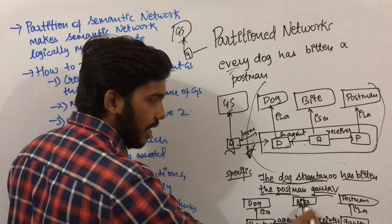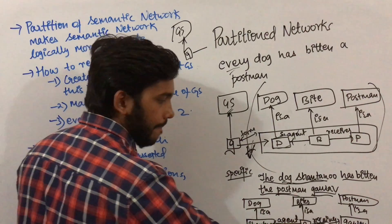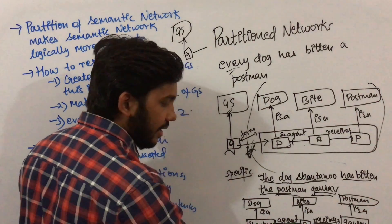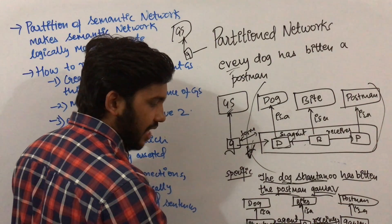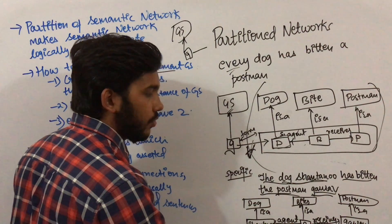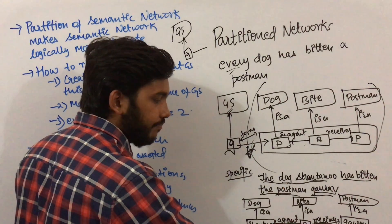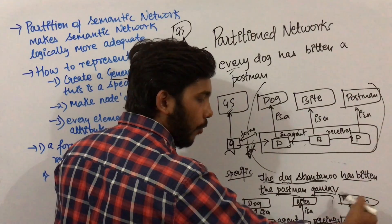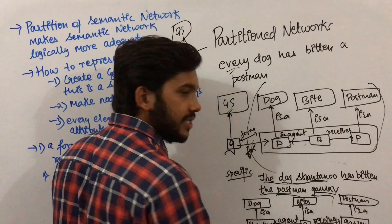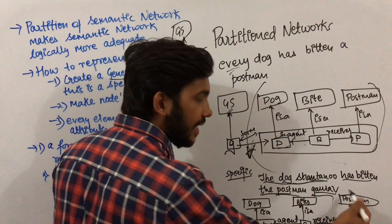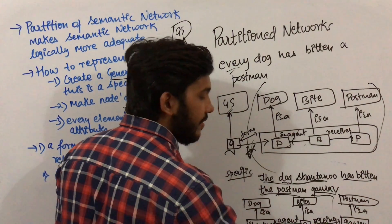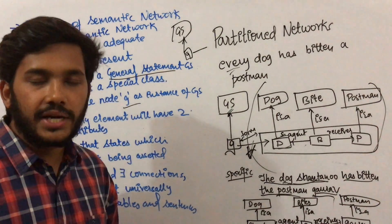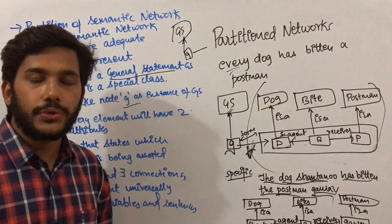In this specific instance, Shantanu is a dog, B is a bite, and Gaurav is a postman. Shantanu is the agent since he performs the biting, and Gaurav is the receiver since he is being bitten. This was all about partition semantic network. Thank you.